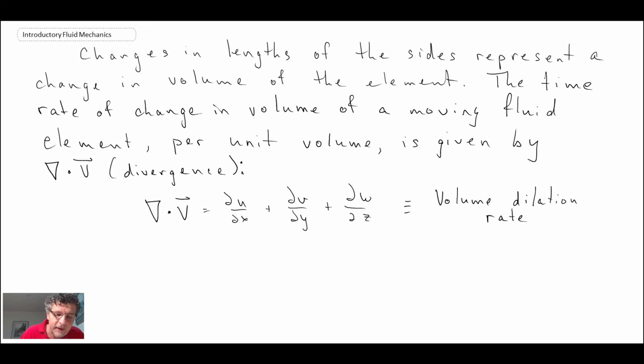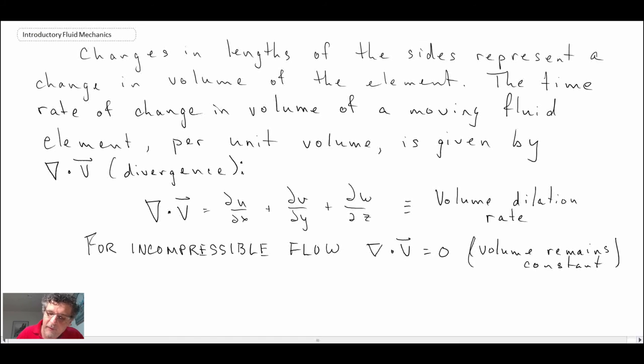Quite often we're dealing with incompressible flows, so if we do have an incompressible flow, recall when we looked at the continuity equation, we said that for incompressible flow, del dot v was equal to zero, and that's basically saying that the dilation or the volume dilation rate is zero, which would make sense because what that means is that for incompressible flow, the volume remains constant. That is, it does not change as the fluid element convects and moves.